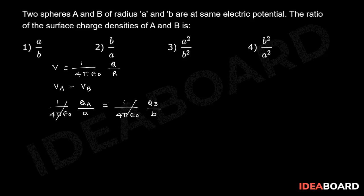1 by 4 pi epsilon 0 get cancelled. Now it is qA by A is equal to qB by b.